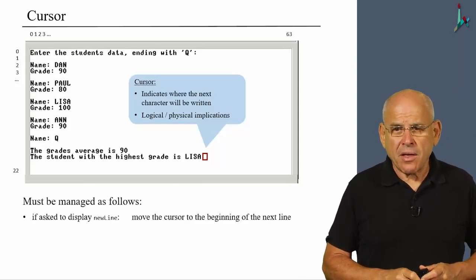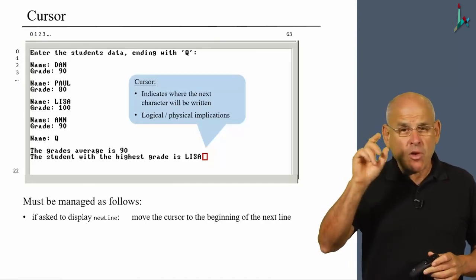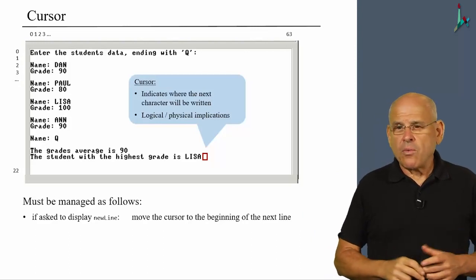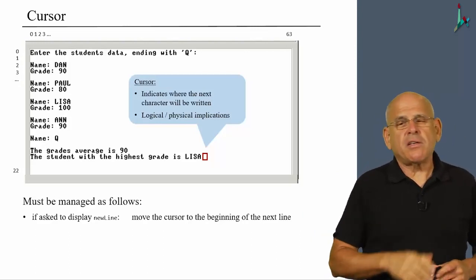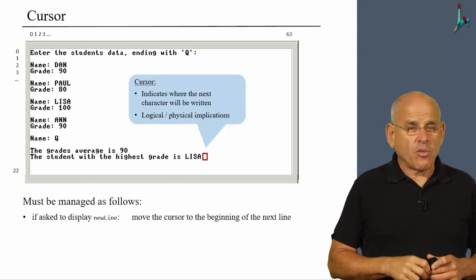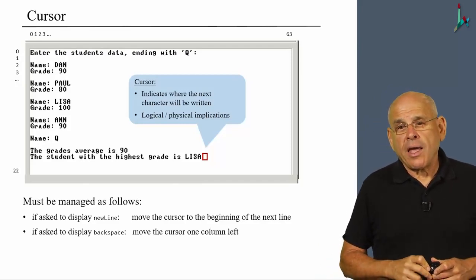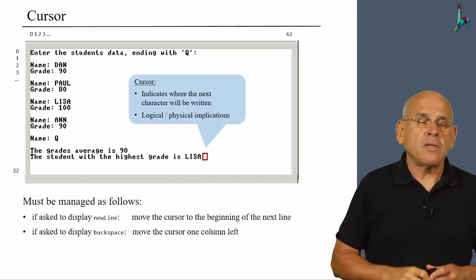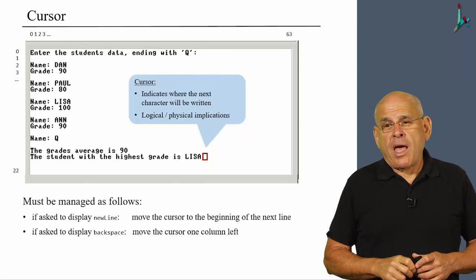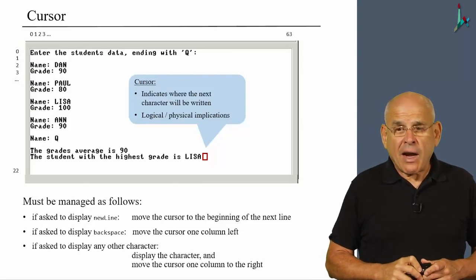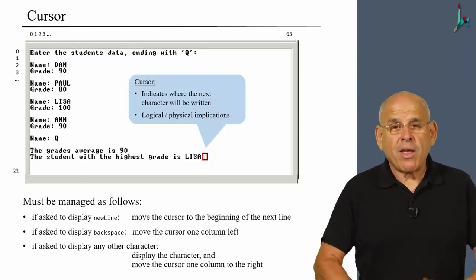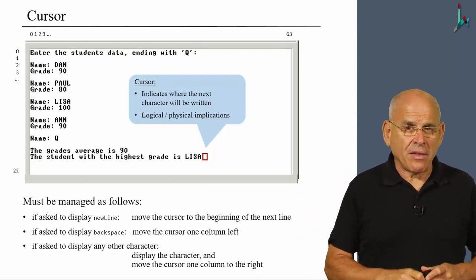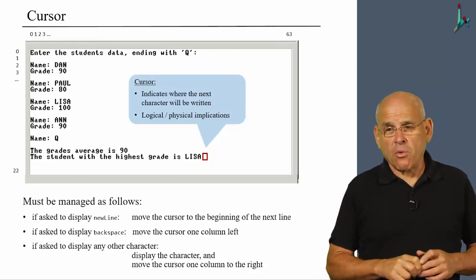All right, so how should we manage the cursor? Well, if we are, and I'm talking now about the logical cursor. If we are asked to display new line, well in that case, we have to move the cursor to the next line on the output. If we are asked to display backspace, we have to move the cursor one column to the left. And if we are asked to display any other character, then we have to display the character and move the cursor one column to the right. So these are the rules of the game.